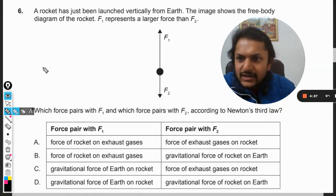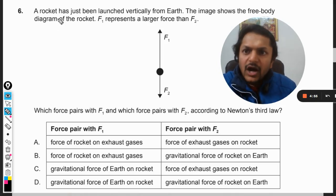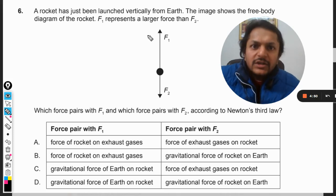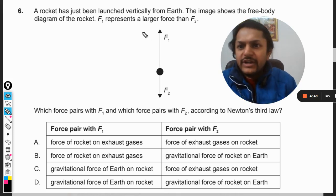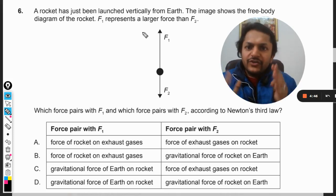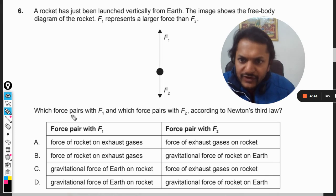Okay students, let us see this next question. A rocket has just been launched vertically from Earth. The image shows the free body diagram of the rocket. F1 represents a larger force than F2.